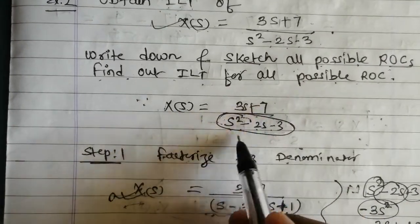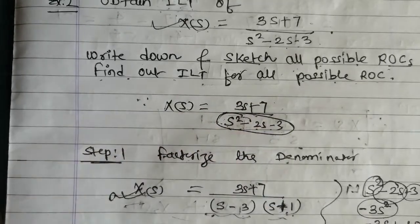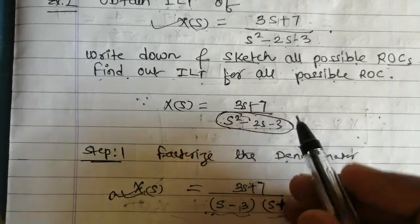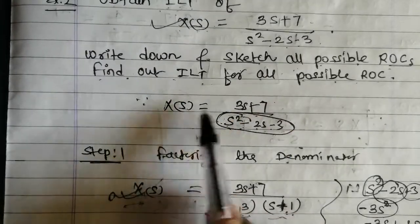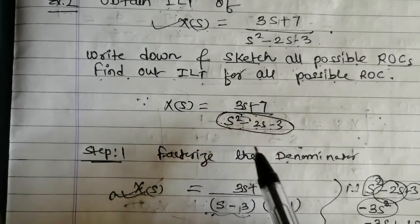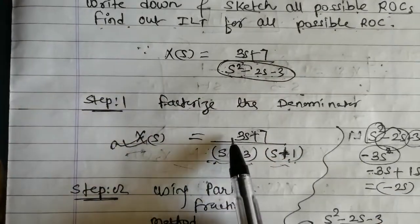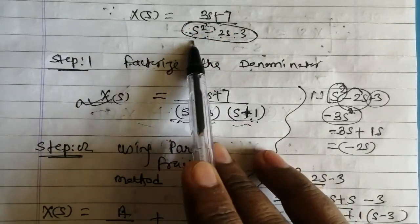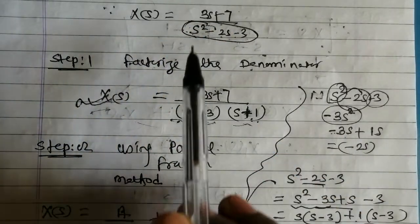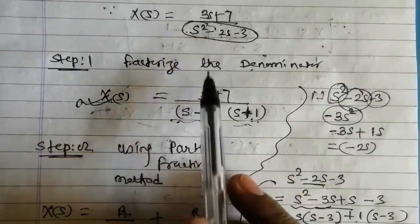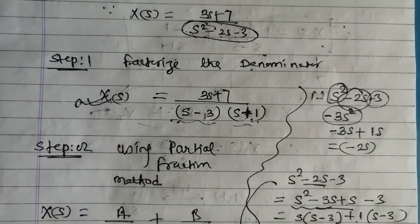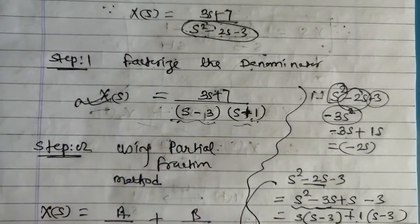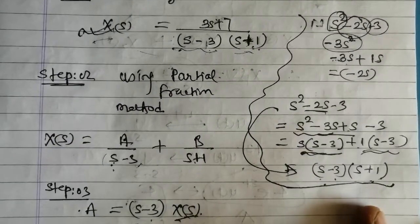X(s) is given as (3s+7)/(s²-2s-3). To find the inverse Laplace transform we use the partial fraction method, and for that we need to factorize the denominator. Step one is to factorize the denominator part. The denominator is a quadratic equation, so we find its roots first and then write it in the form of factors. We obtain the factors as (s-3) and (s+1).